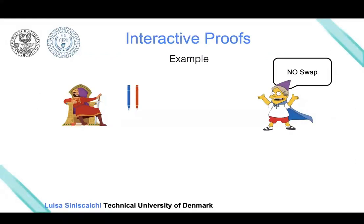Let's reason more carefully about the properties of this interactive proof. We said that if the theorem is true—meaning the prover is not color-blind—then the verifier will always believe the prover. In this interactive proof, this happens with probability one, because if the prover is not color-blind he can always distinguish when the pencils were swapped or not. So the first property holds.